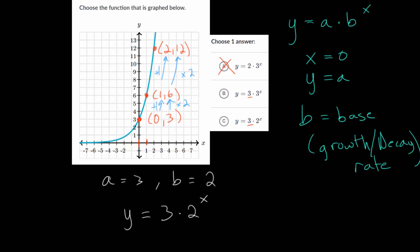Choice letter B wouldn't be correct because it has the wrong base here. This has a base of 3, it would be multiplying by 3 every time. So this would go through (1, 9), (2, 27). That just leaves us with one choice, and it is the equation that we determined by comparing it to this general formula here.